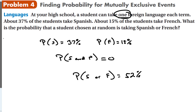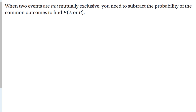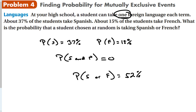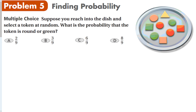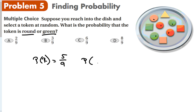When two events are not mutually exclusive, you need to subtract the probability of the common outcomes to find the probability of A or B. Suppose you reach into a dish and select a token at random. What's the probability that the token is round or green? The probability of round is 5 out of 9, and the probability of green is 3 out of 9. If we just added those, we'd get 8 over 9, but that's not correct, because 2 tokens are both round and green — so we've counted them twice.